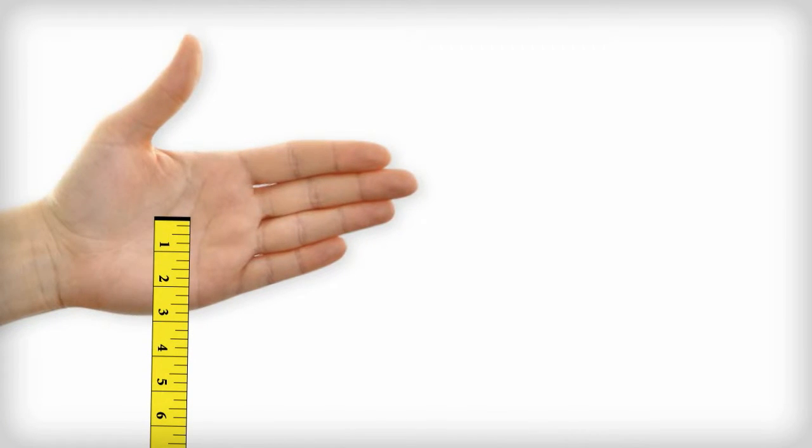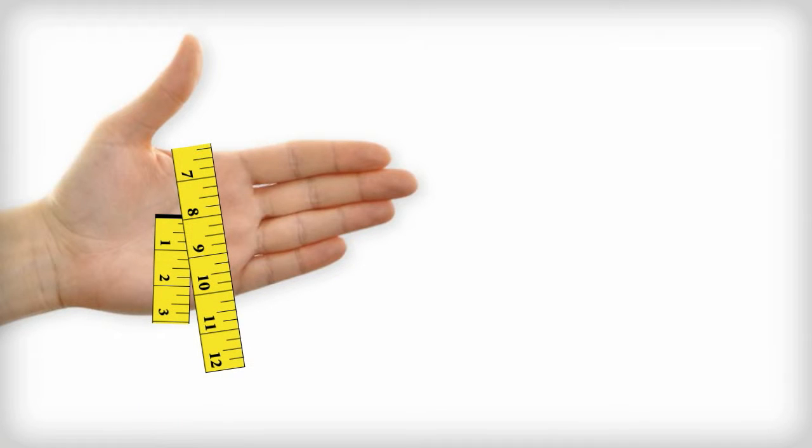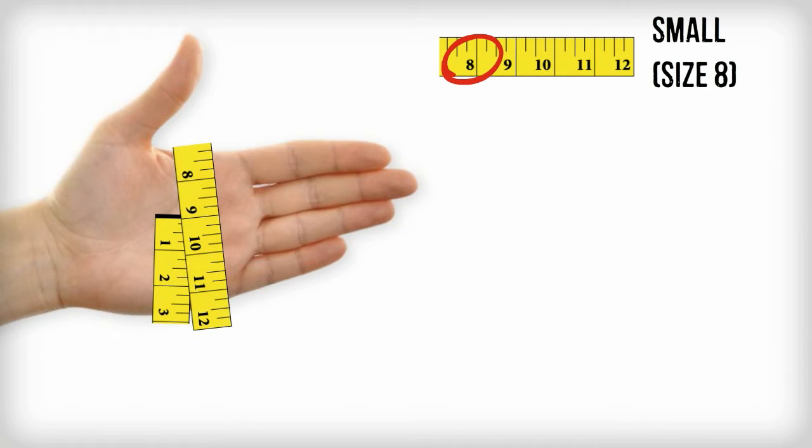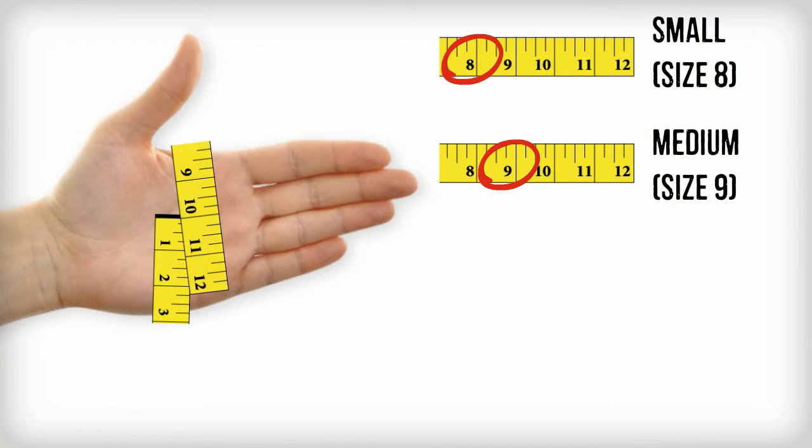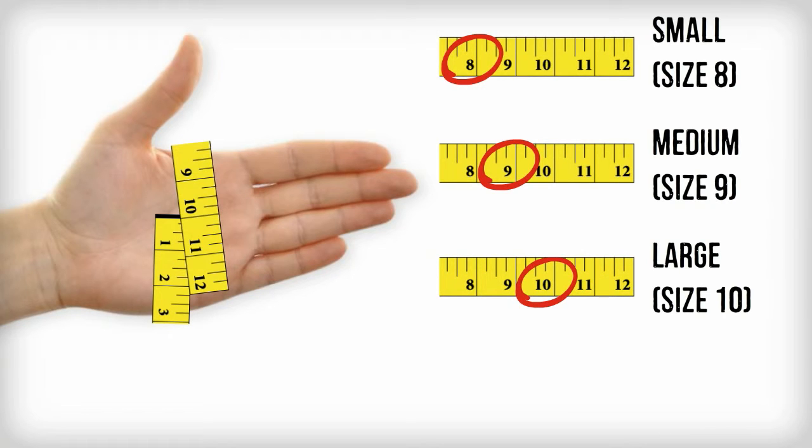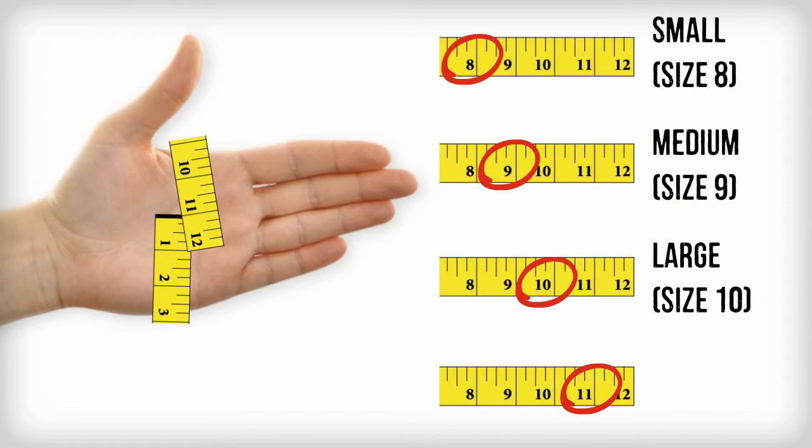Choose your glove size by measuring all the way around your palm. 8 inches or 200 millimeters is small, 9 inches or 225 millimeters is medium, 10 inches or 250 millimeters is large, and 11 inches is extra large.